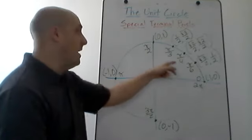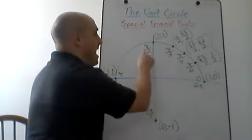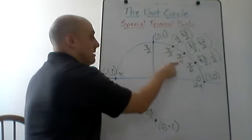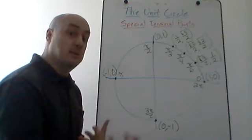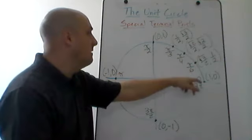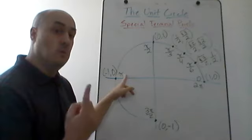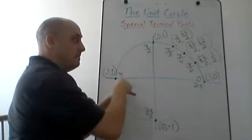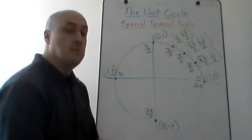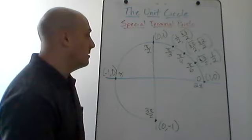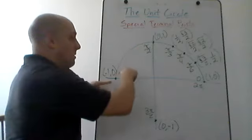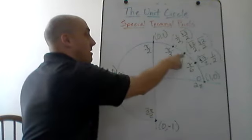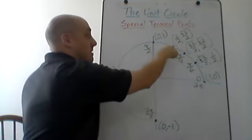Pi over 4 is one-fourth of pi — think of that as half of pi over 2. If I go halfway through the first quadrant, that gives me pi over 4. Pi over 2 divided by 2 would be pi over 4. Pi over 3 is one-third of the way all the way around to pi. So pi over 6 is the first one you get to, then pi over 4, pi over 3, and then pi over 2 is straight up and down.